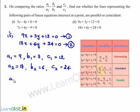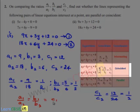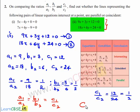So let us find a1 by a2, which is nothing but 9 by 18, which is 1 by 2. And b1 by b2 is equal to 3 divided by 6, which is nothing but 1 by 2. And c1 by c2 is equal to 12 divided by 24, which is nothing but 1 by 2. All three values are equal to 1 by 2, so a1 by a2 is equal to b1 by b2 is equal to c1 by c2. By using the second condition, the given set of equations represent coincident lines.